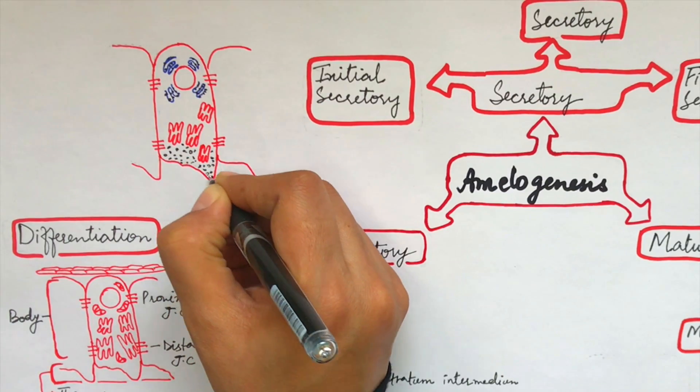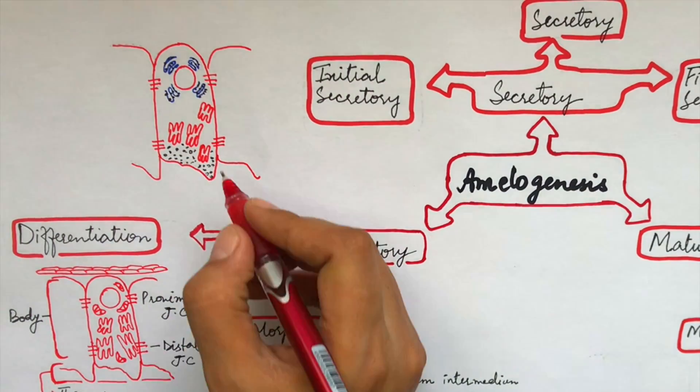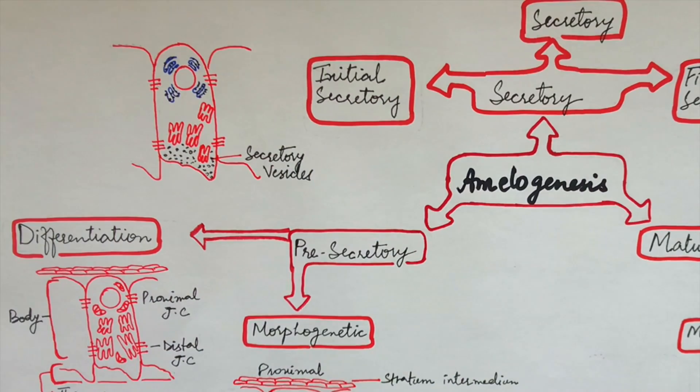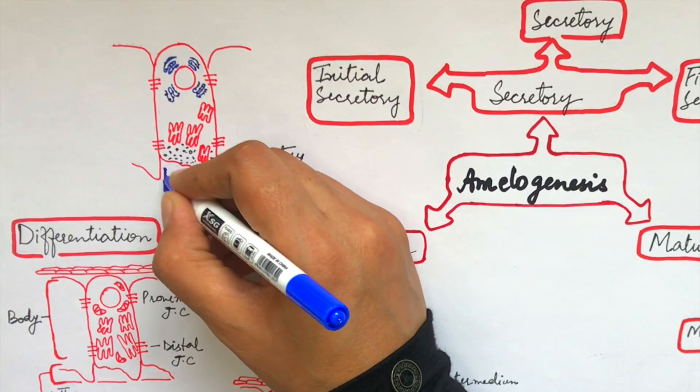The translated proteins are processed and packed into membrane-bound vesicles through Golgi complex in the distal extremity of the cell, also called the Tomes' process. But still, Tomes' process is not yet fully developed here.